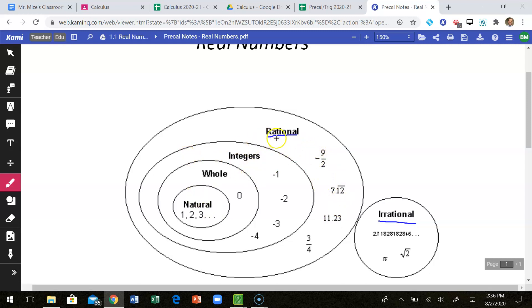You want to think of a rational number as any number that can be put into a fraction. So you could have a proper fraction, like 3 fourths. You could have an improper fraction, like negative 9 halves. And then you could have a decimal that either stops, like 11.23, or a decimal that repeats. Those can all be put into fractions. So we call those rational numbers.